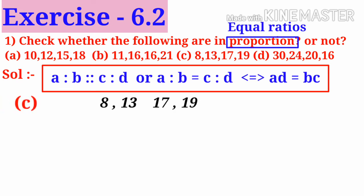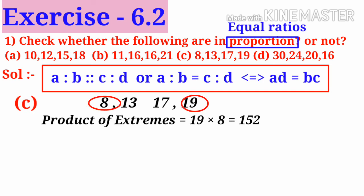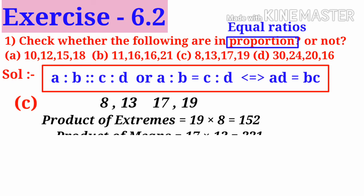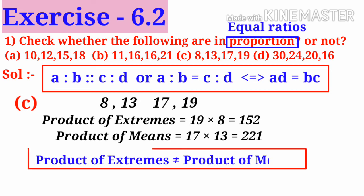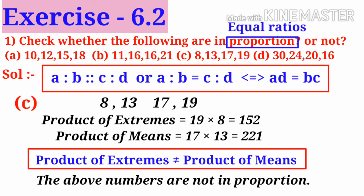Now C: 8, 13, 17, 19. Take the extreme values 8 and 19. Take the product: 19 into 8 is 152. Now take the middle terms 13 and 17. Take the product: 17 into 13 is 221. These values are not equal. So product of extremes is not equal to product of means. So the above numbers are not in proportion.